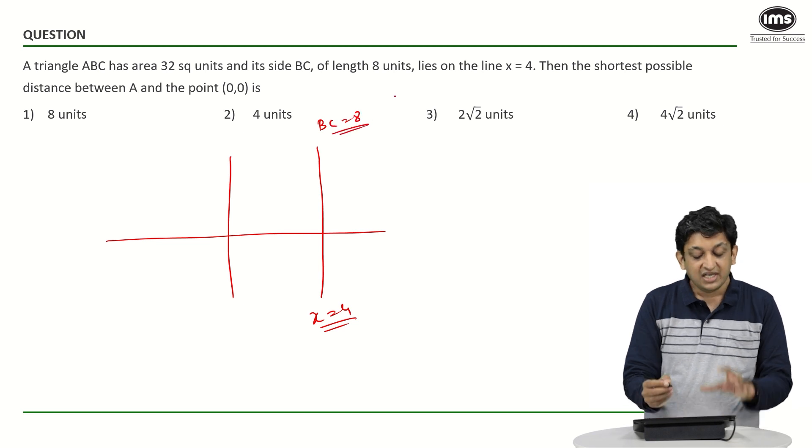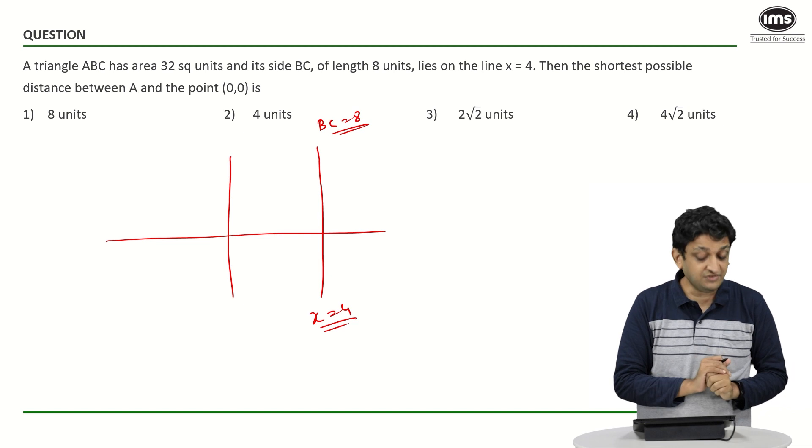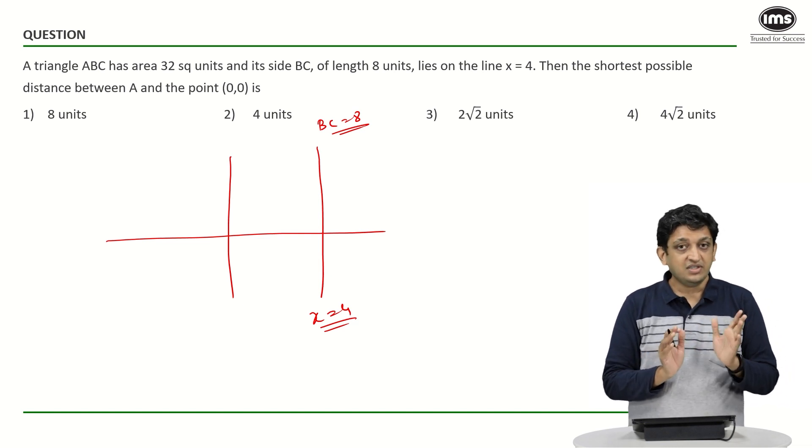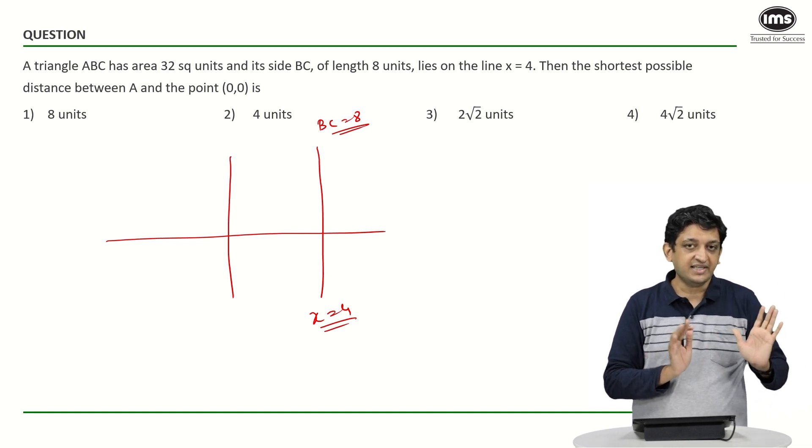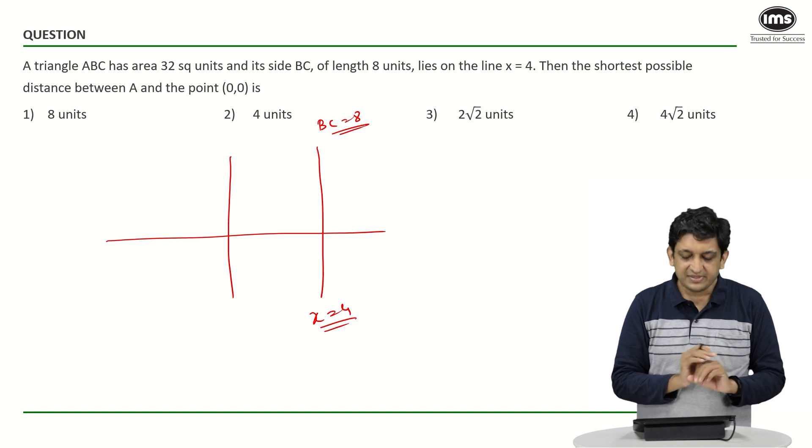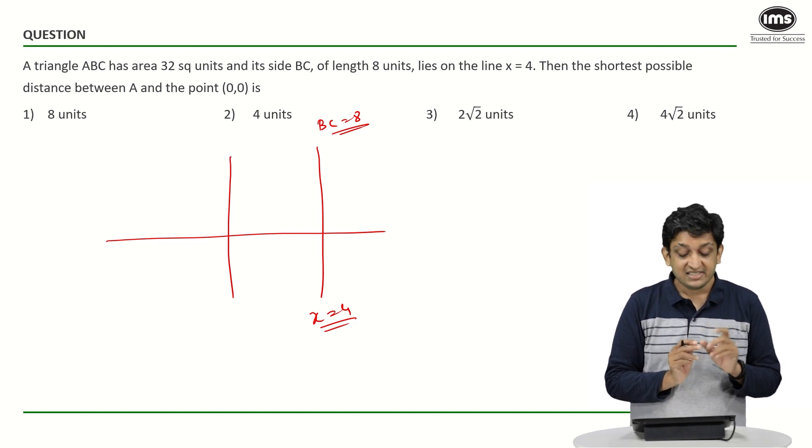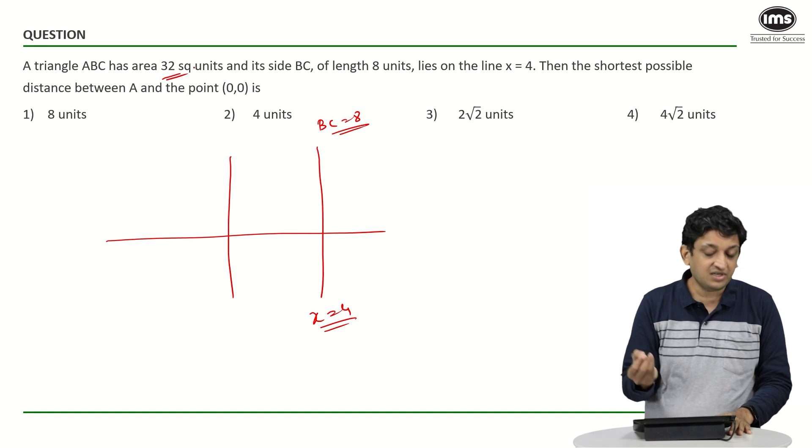We know that BC will essentially be a line of 8 units which will lie along this particular vertical line that we have just drawn. We want to figure out the distance between the vertex, the third vertex, and the origin.